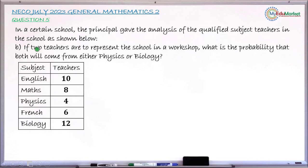The question number B says, if two teachers are to represent the school in a workshop, that is, two teachers from this number of teachers will be selected to represent that school in a particular workshop. The question asked here is, what is the probability that both teachers selected will come from either Physics or Biology? That is, the teachers selected are both either Physics teachers or both Biology teachers.